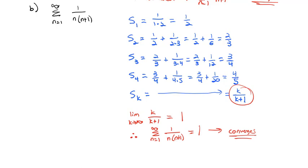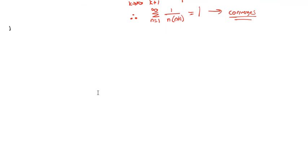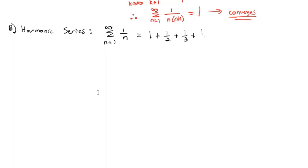That's a brief introduction to deciding if series converge or diverge. I want to talk about three special series that come up quite a bit. The first is one of the most famous series in calculus: it's called the harmonic series. The harmonic series is the sum as n goes from 1 to infinity of 1 over n — basically 1 plus 1 half plus 1 third plus 1 fourth plus 1 fifth plus 1 sixth, and so on. We should recognize this harmonic series quickly as we continue studying calculus.